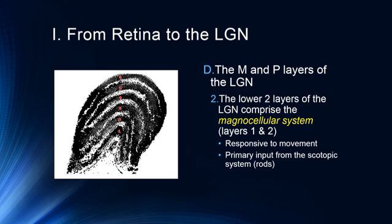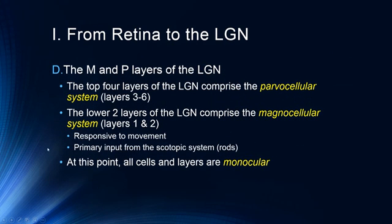The bottom two layers, layers 1 and 2, are the magnocellular system, which is primarily responsive to movement and receives its primary input from the scotopic system. At this point, cells in the layers are still monocular — each cell responds to only one eye, so there is no depth perception yet. The parvocellular system handles color and detailed vision from the cones, while the magnocellular system is primarily responsive to movement, low levels of illumination, and has no fine detail. When we move into the cortex, the parvocellular system primarily feeds into the 'what' pathway and the magnocellular system feeds into the 'where' pathway, though they're not entirely independent.